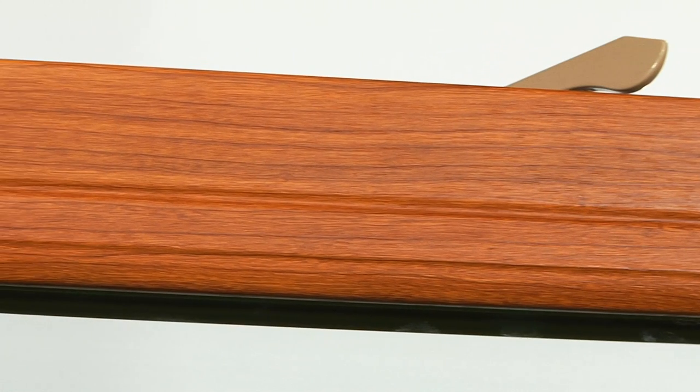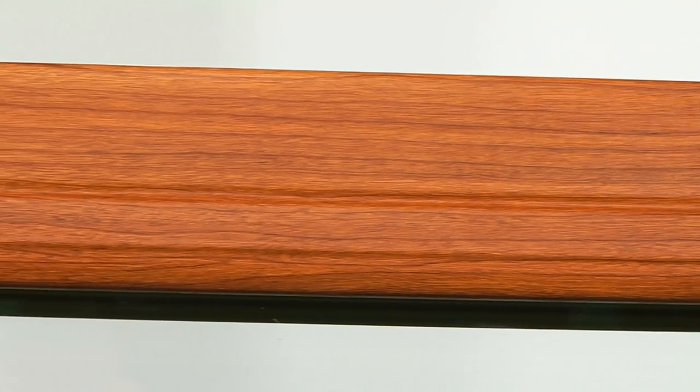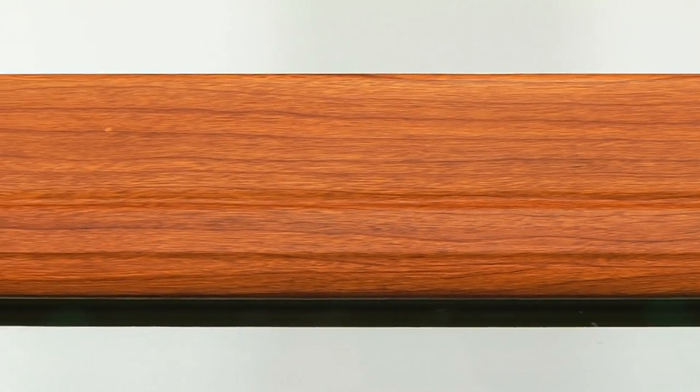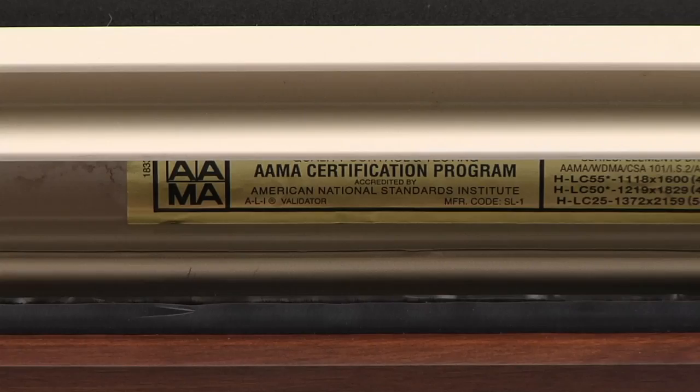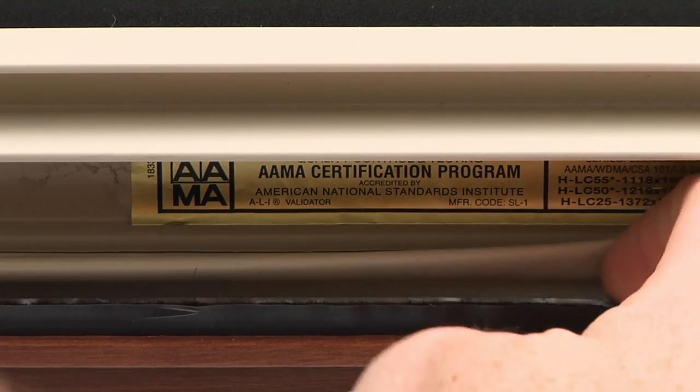The master frame and sash contain multi-chambered structural walls that are over 40% thicker than the average vinyl window. Q-lon compression weather stripping used to insulate most refrigerator doors is also used to seal the i-Series double hung for maximum draft protection.